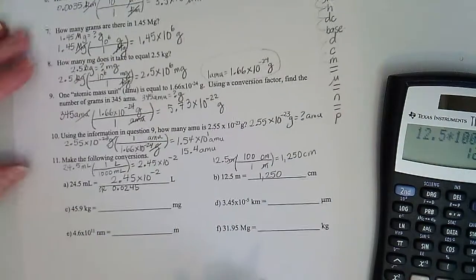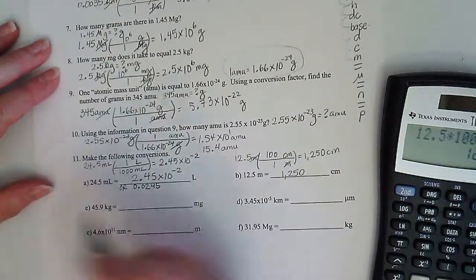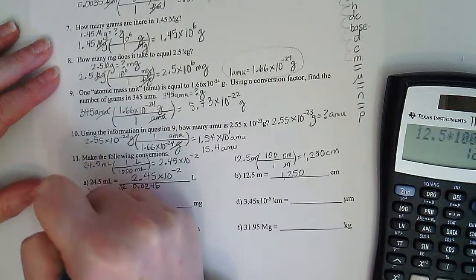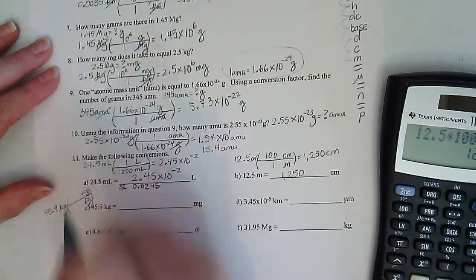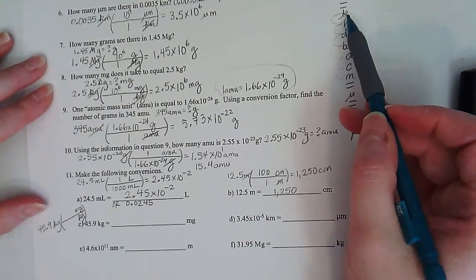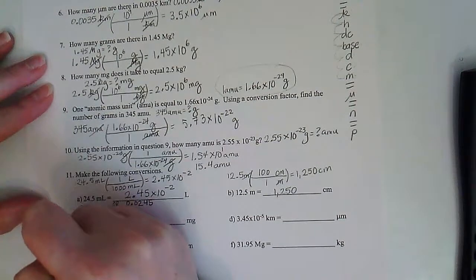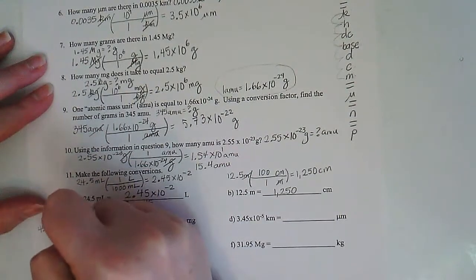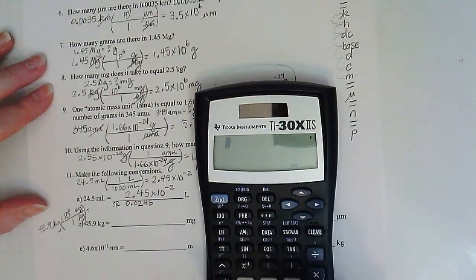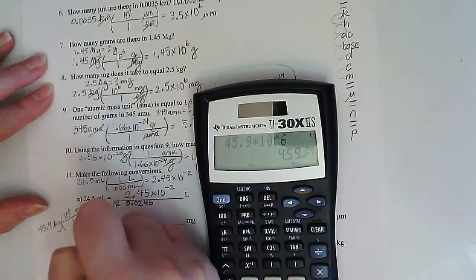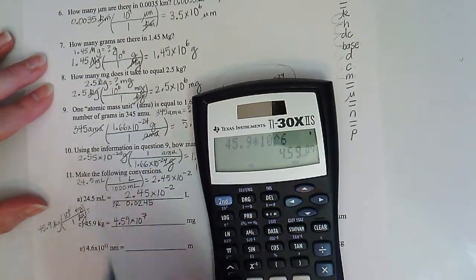Part C: 45.9 kilograms to milligrams. Kilograms go on the bottom; milligrams go on the top. Kilograms is right here; milligrams is here. Kilograms is larger — 10 to the 1, 2, 3, 4, 5, 6 — 10 to the 6th. 45.9 times 10 to the 6th equals 4.59 times 10 to the 7th milligrams.